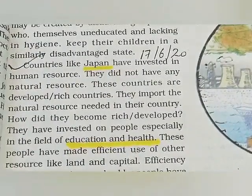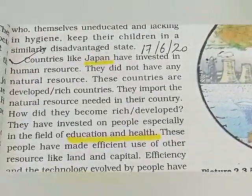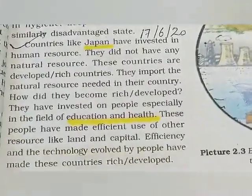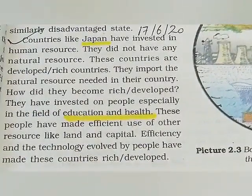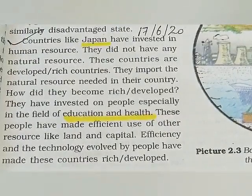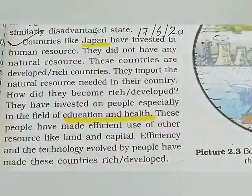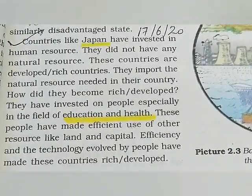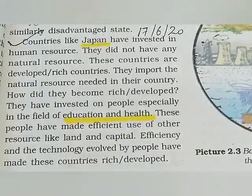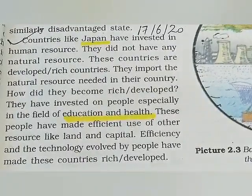Japan is taken as an example because it is a developed country, and through its example we can understand other things. They have made very heavy investment in education and health. These people have made efficient use of other resources like land and capital. The efficiency and technology developed by people have made these countries rich and developed. With more investment in health and education, efficiency increases and technology evolves. So the facilities of education and health have contributed greatly to these countries.